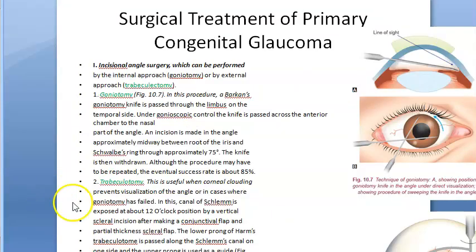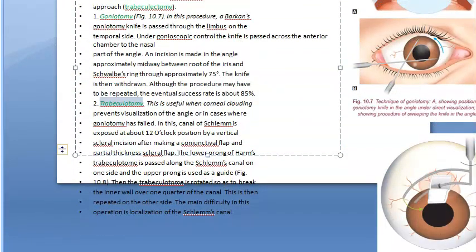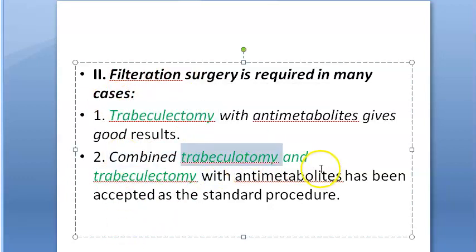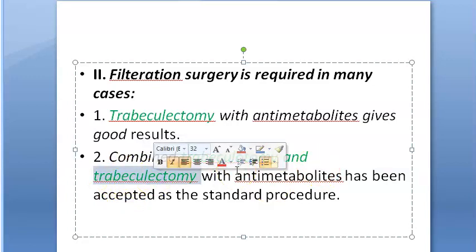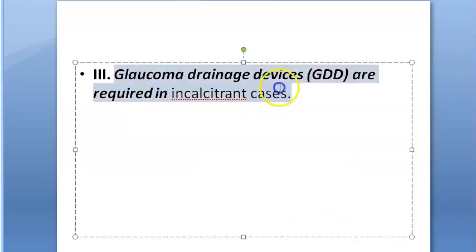Treatment of primary congenital glaucoma: incisional angle surgery — goniotomy and trabeculotomy. Also trabeculectomy (filtration surgery) and combined trabeculotomy with trabeculectomy. Trabeculotomy makes openings in the existing trabecular meshwork; trabeculectomy creates a new drainage path. Glaucoma drainage devices are used in refractory (stubborn) cases.